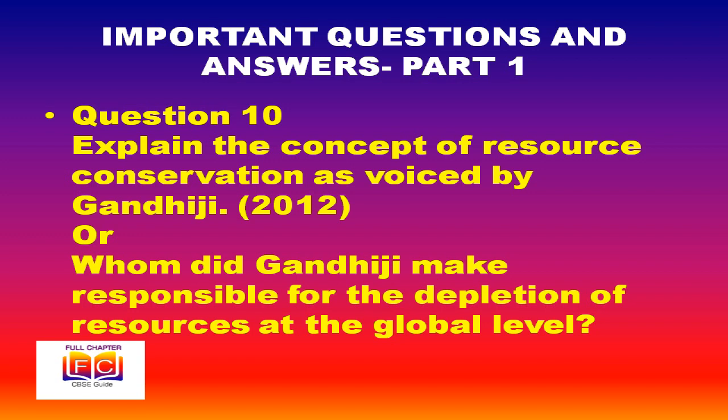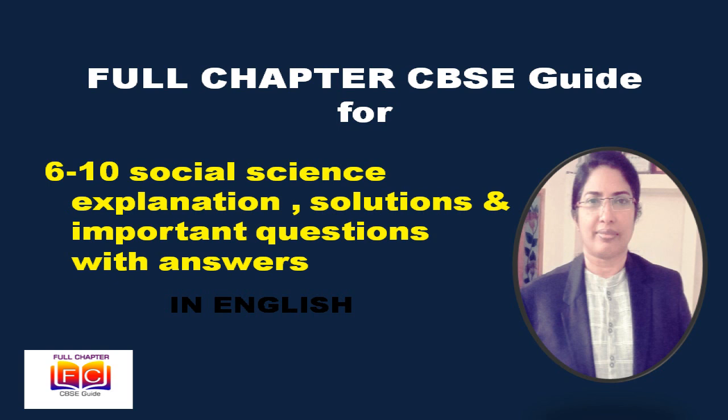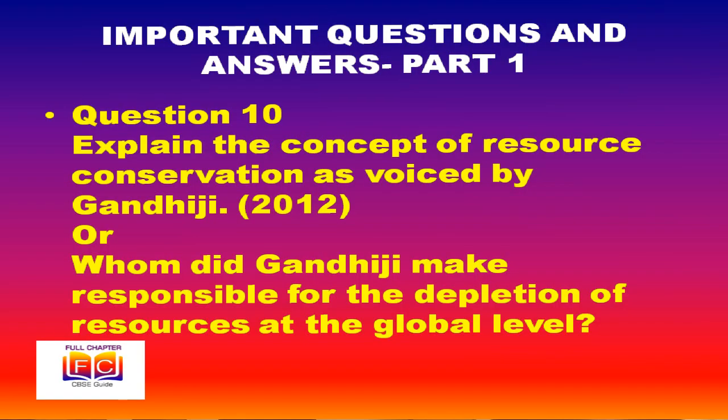Explain the concept of resource conservation as voiced by Gandhiji. Gandhiji voiced his concern in these words: 'There is enough for everybody's need and not for anybody's greed.' He placed greedy and selfish individuals as the root cause of resource depletion at the global level. He was against mass production and wanted to replace it with production by the masses. Indiscriminate use of resources by human beings has led to depletion for satisfying the greed of few individuals.